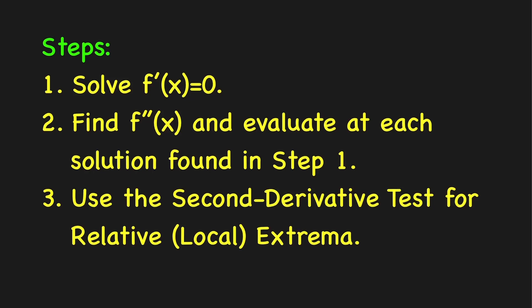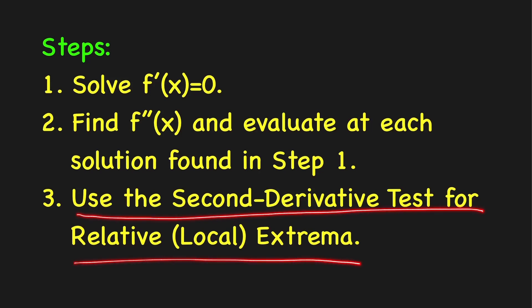Here are the three steps in finding the local extrema of a function f using the second derivative test. First, solve the equation f prime of x equals zero. Second, find the second derivative and evaluate it at each solution found in step one. Last step, use the second derivative test to determine whether f has a local minimum or local maximum at each solution.